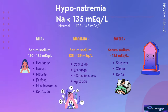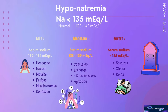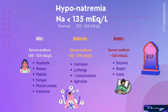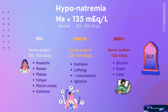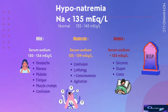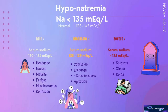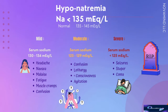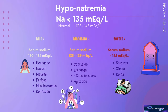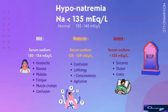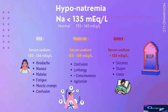Hyponatremia can present with a variety of signs and symptoms depending on severity and rapidity of onset. The most significant to recognize are neurological symptoms, which indicate severity. Due to brain swelling and increased intracranial pressure, mild to moderate hyponatremia can cause headache, nausea, fatigue, muscle cramps, and confusion. In severe hyponatremia, neurological signs will be more pronounced — seizure, stupor, coma, and in rare cases, death.